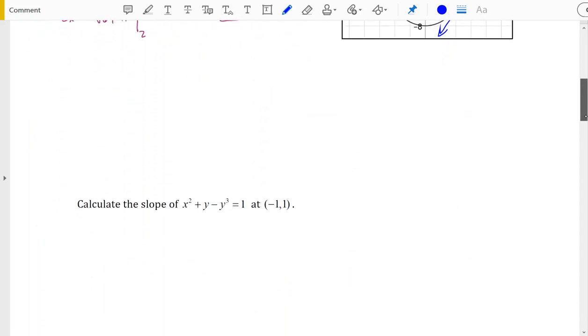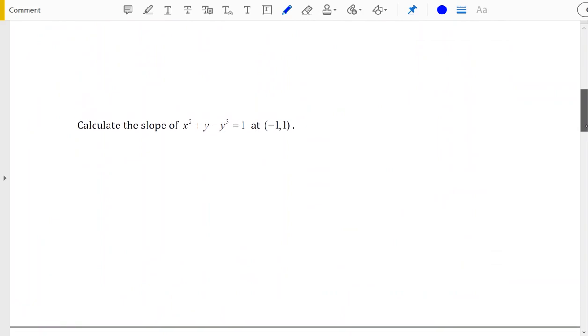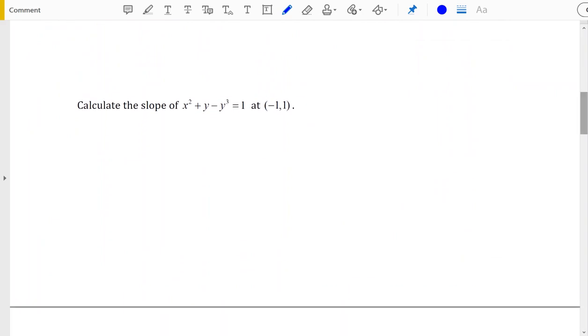There's one other question then we might ask ourselves, and that would be what if we wanted to calculate the slope of the following equation: x squared plus y minus y cubed equals 1. Well if we were to approach this problem like we did the one before, we would try to isolate y, and once we had isolated y we would then calculate the derivative of that equation.